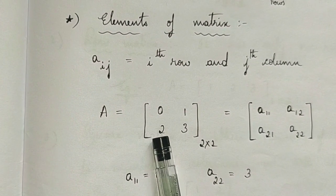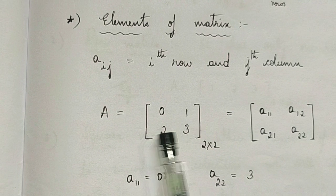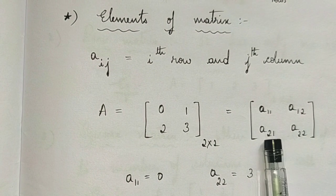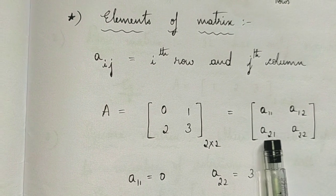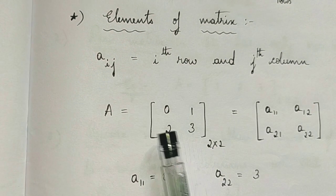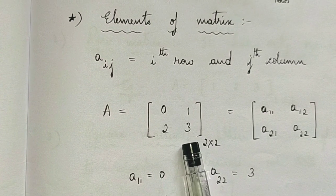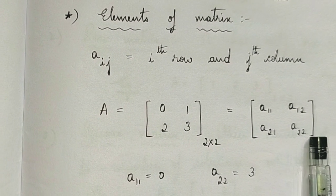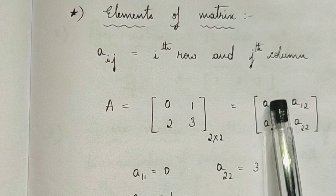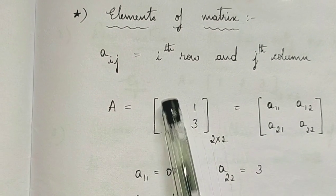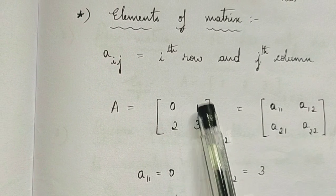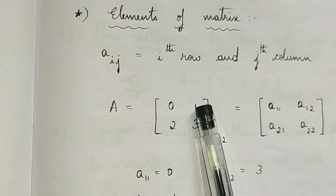Next we have the element in the second row, first column — so it is a(2,1). The next number is in position second row, second column — that is a(2,2). So our first element a(1,1) at position first row, first column, we have 0. At position a(1,2), first row, second column, we have 1.